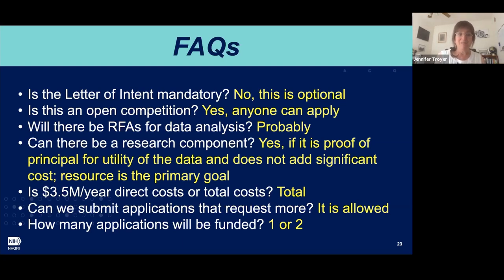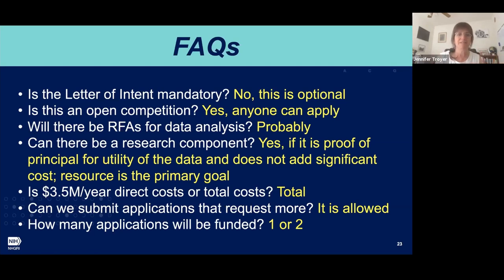How many applications will be funded? Within that funding envelope, it is one complete resource. We might make that complete resource by putting together two different centers if they have complementary strengths — for example, one group has great samples but less analysis experience, another has great analysis but lacks samples. We might put those together. You could also see it running by two different species coming together. But we're not going to double the amount of money, so both would be at a reduced funding level. Our programmatic priority is to put together the best resource possible.